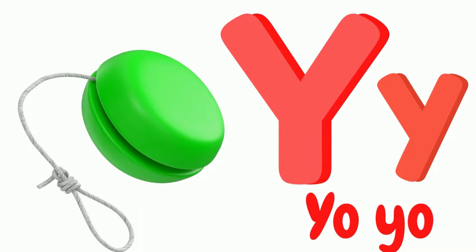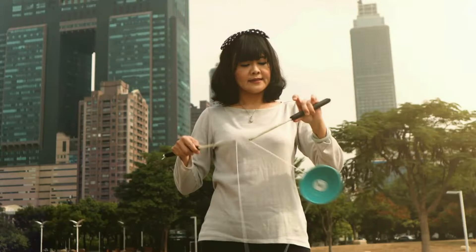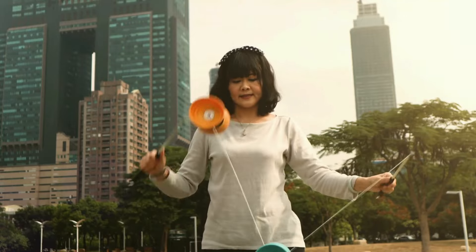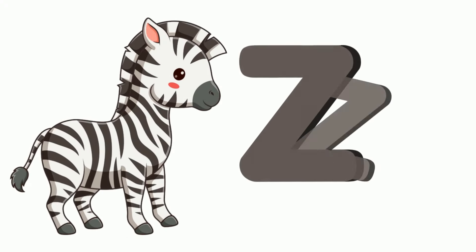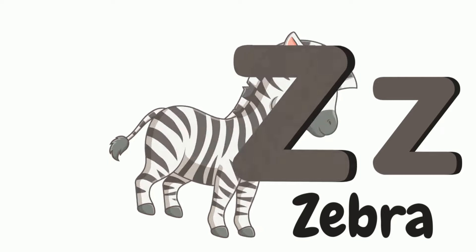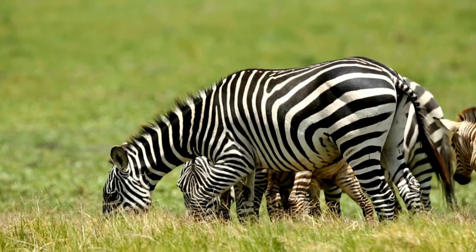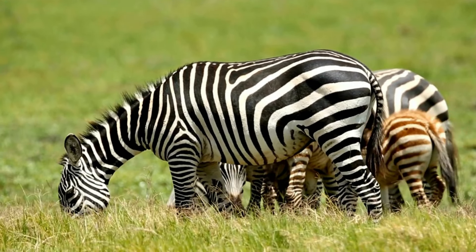X is for Xylophone. Xylophone, xylophone. This is an xylophone. Xylophone. Y is for Yo-yo. Yo-yo, yo-yo. This is a yo-yo. Yo-yo. Z is for Zebra. Zebra, zebra. This is a Zebra. Zebra, zebra.